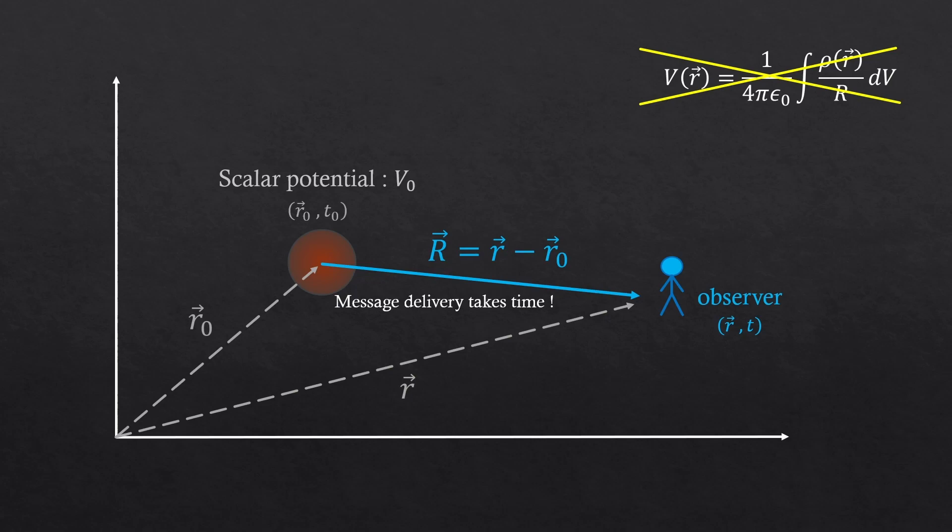What if the scalar potential has changed after the information was sent? Then in that case, the value that the observer measured would not represent the scalar potential at this moment. So this expression is not realistic. Yes, what you have learned up till now in school was never realistic. We must be aware that we always get retarded information since all information take time to travel.